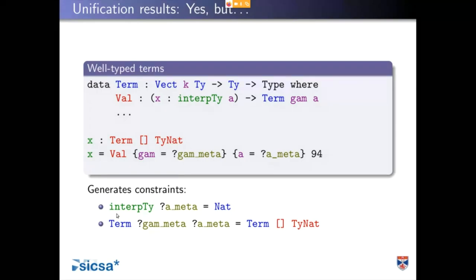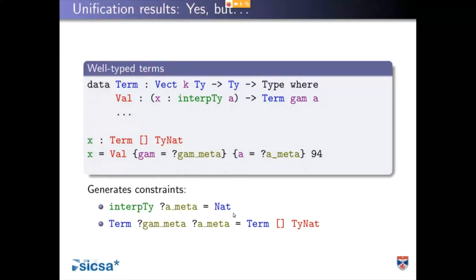There are additional things we will know — for example, the second bullet point is the thing we're going to know. We could look at the definition of interp tie and it might be that there are some properties of interp tie that allow us to do some reasoning. We don't do that at the moment, but it might be beneficial. The important thing to remember is that we are just looking at that one equation, and we collect additional knowledge by doing more unification problems.